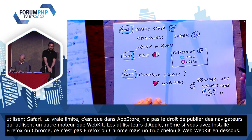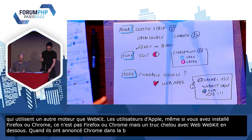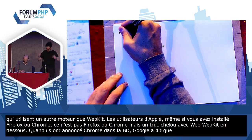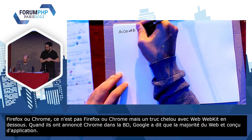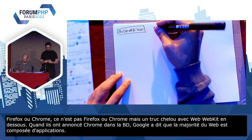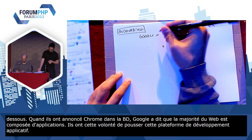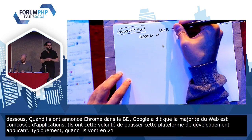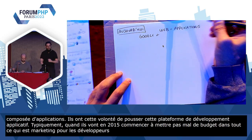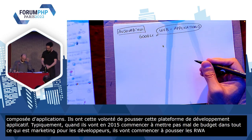Et dans la BD, quand ils ont annoncé Chrome, Google avait déjà fait un constat à la toute première bulle : la majorité du Web n'est plus composée de pages, mais d'applications. Donc, ils ont, à l'opposé de Microsoft, cette volonté de pousser cette plateforme de développement applicatif. Et typiquement, quand ils vont en 2015 commencer à mettre pas mal de budget dans le marketing pour les développeurs, ils vont commencer à pousser les PWA. Là, on va commencer à avoir cette guéguerre entre Web et natif. On est véritablement dans le cadre d'un développement complet.